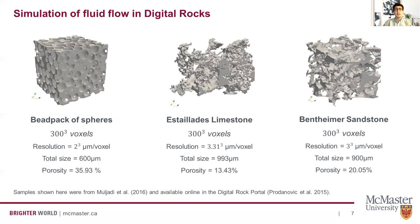We used three rock samples — namely a pack of spheres, Estaillades limestone, and Berea sandstone — to simulate single-phase flow for permeability estimation. They are all 300-cube voxels in size with various resolutions and porosities. The CT-segmented images of these three rock samples were provided by Muljadi et al. 2016 and are publicly available online in the Digital Rock Portal.